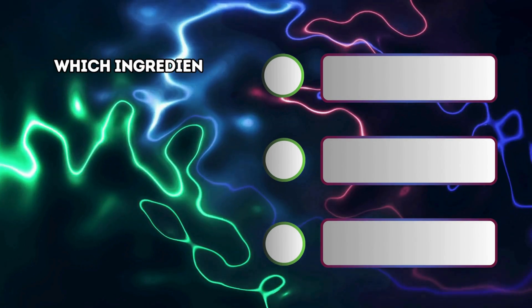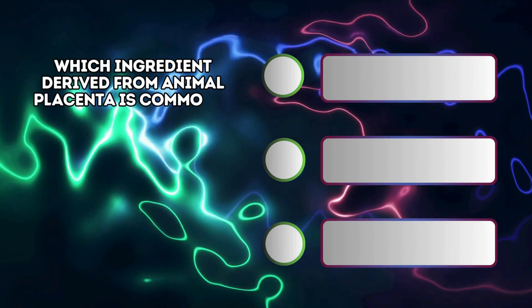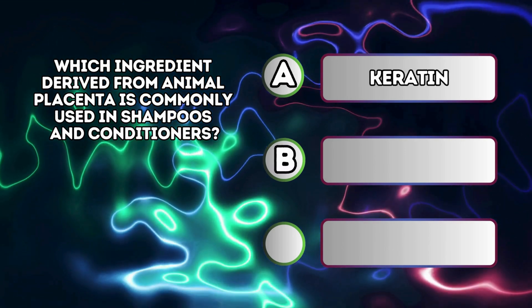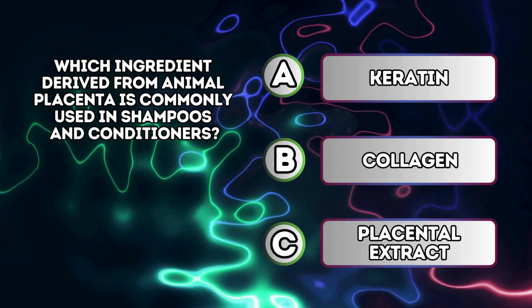Which ingredient derived from animal placenta is commonly used in shampoos and conditioners? A. Keratin B. Collagen C. Placental extract